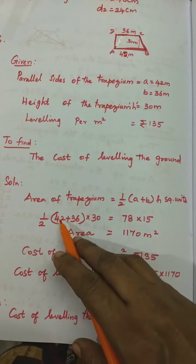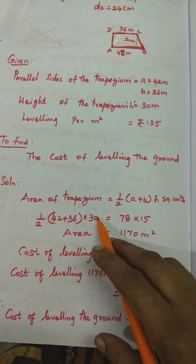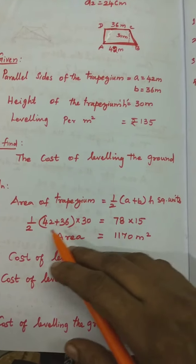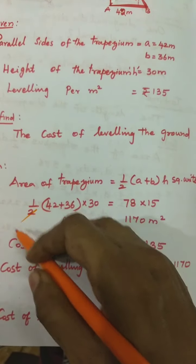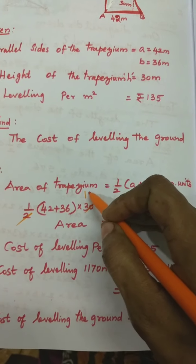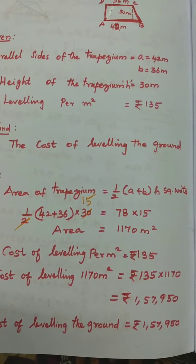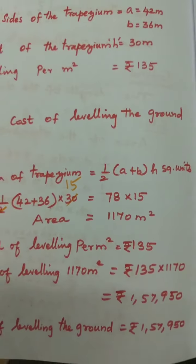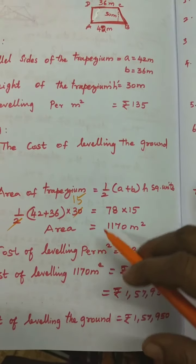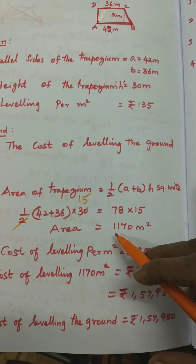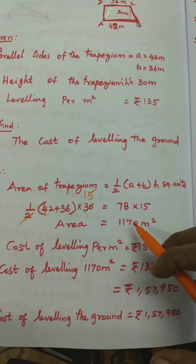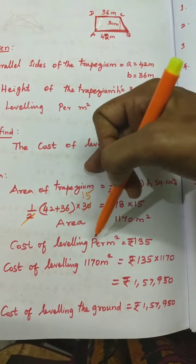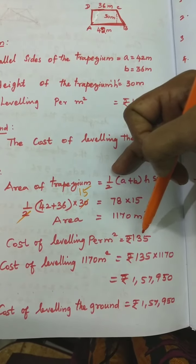Area = (1/2) × (42 + 36) × 30. Cancel 2 and 30 to get 15. Then 42 + 36 = 78; 78 × 15 = 1170 square metres. Cost of levelling = ₹135 per square metre.